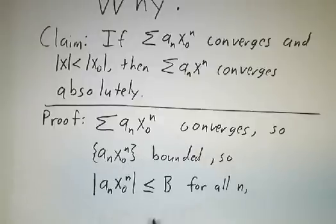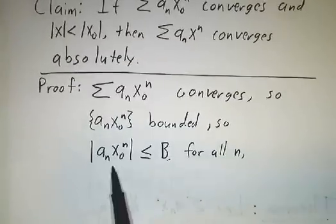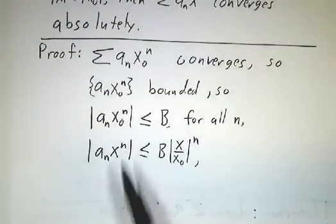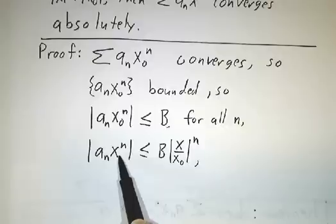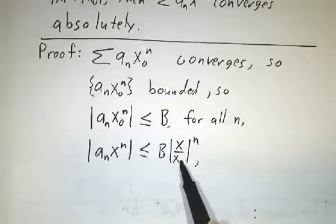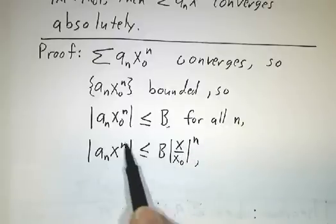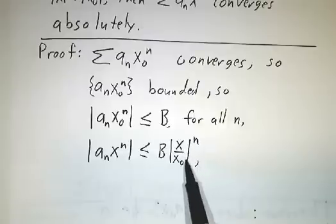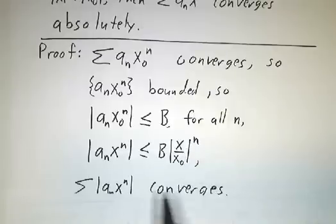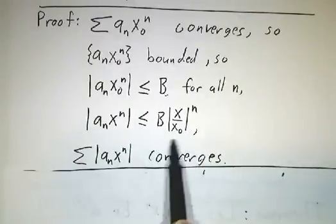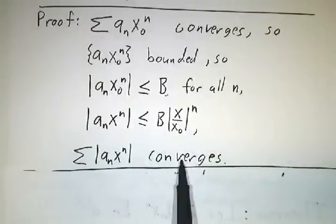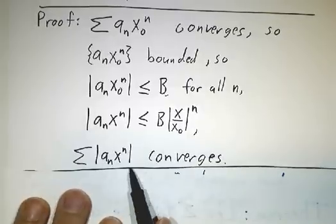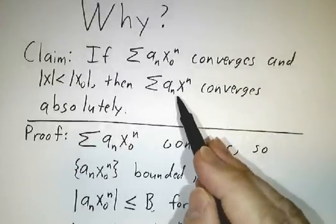Well, now we replace x0 to the n by x to the n. That's like multiplying by x to the n over x0 to the n. But x was less than x0. So this is less than a geometric series, and the geometric series converges. So this converges with the absolute values, so the original series converges absolutely.